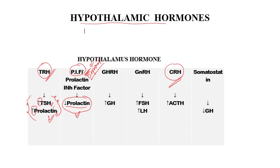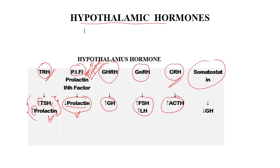Growth hormone-releasing hormone will increase the secretion of growth hormone. Gonadotropin-releasing hormone, GnRH, will increase FSH and LH. Corticotropin-releasing hormone will increase ACTH. The last one is an inhibitory hormone: somatostatin, which will decrease growth hormone. In this whole list we have two inhibitory molecules — prolactin inhibitory factor (dopamine), which decreases prolactin, and somatostatin, which decreases growth hormone. All others are stimulatory.